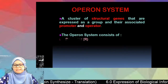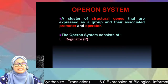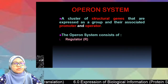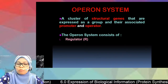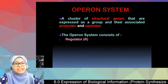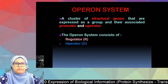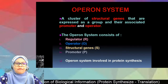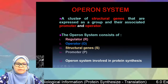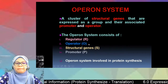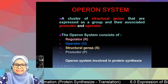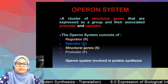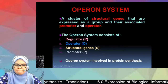What is the operon system? The operon system is a cluster of structural genes that are expressed as a group, associated with a promoter and operator. The operon system has four important components: regulator, operator, structural gene, and promoter. You need to remember all four of these.